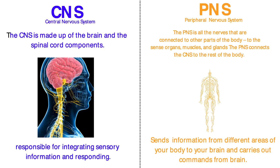The central nervous system (CNS) is made up of the brain and spinal cord and is responsible for integrating sensory information and responding. The peripheral nervous system (PNS) is made up of all the other nerves connected to the rest of the body — essentially all nerves not part of the CNS. It sends information from different areas of the body to the brain and carries out commands from the brain.